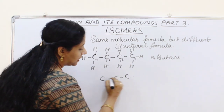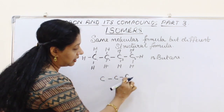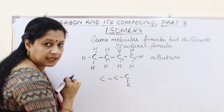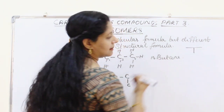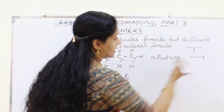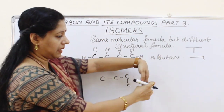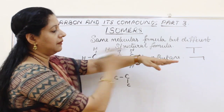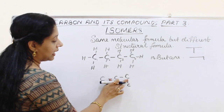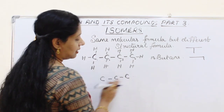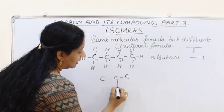If we place the branch at the end, it becomes a continuous chain again, so we cannot consider it a branch. For a branch to form, it must come off a middle carbon, not the edges. We have to give it inside. So we are giving it here on the second carbon.